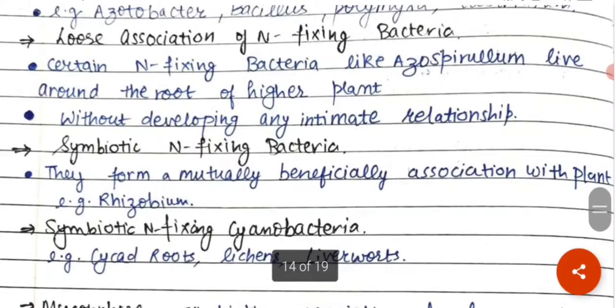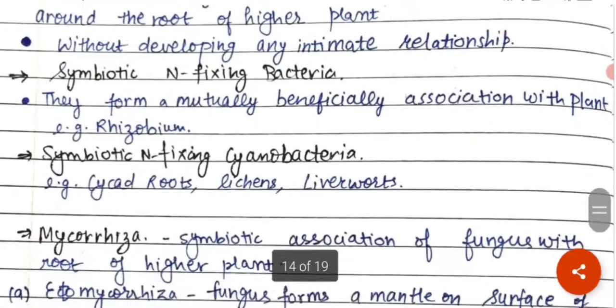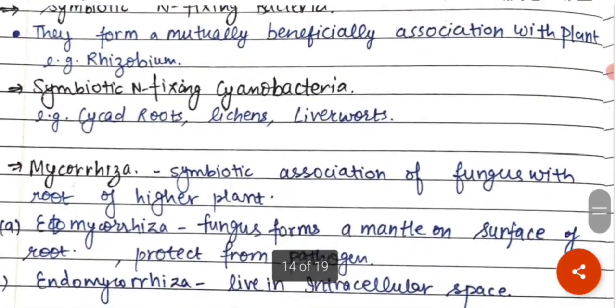Symbiotic nitrogen fixing bacterias — unki mutual association hoti hai plant ke saath, jaise ki Rhizobium bacteria. Symbiotic nitrogen fixing cyanobacteria jaise ki Cycas roots, lichens, aur liverworts.